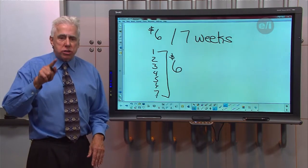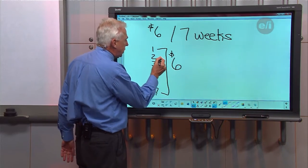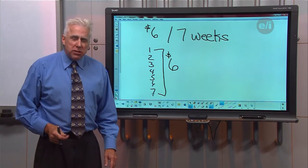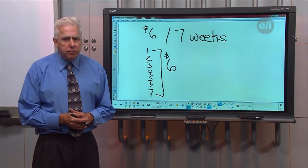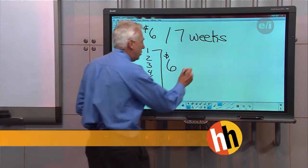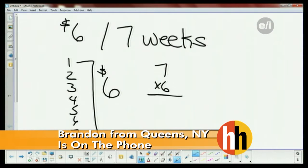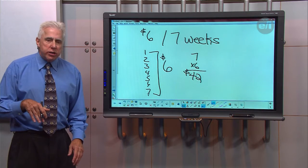Now, we want to know the total. Well, what we could do, Brandon, is we could add six plus six plus six and do seven additions. Is there an easier way, Brandon? Yeah. What's an easier way? You could multiply seven times six. And what answer would you get when you multiply seven times six, Brandon? 42. Very good. So, that's the price that the slacks came down, $42.